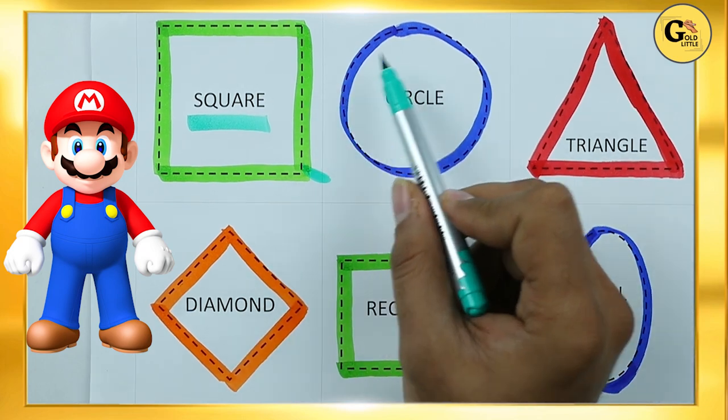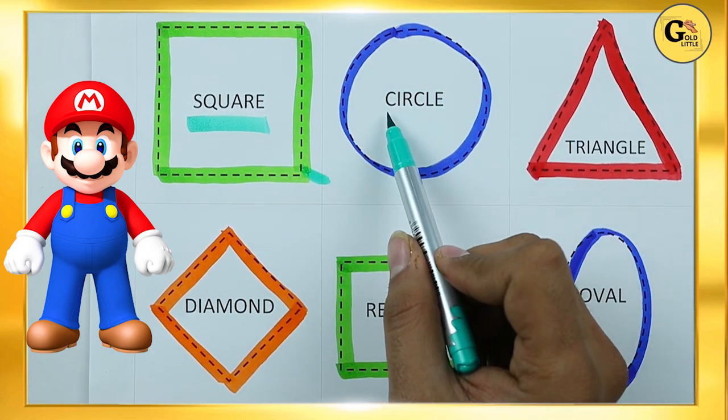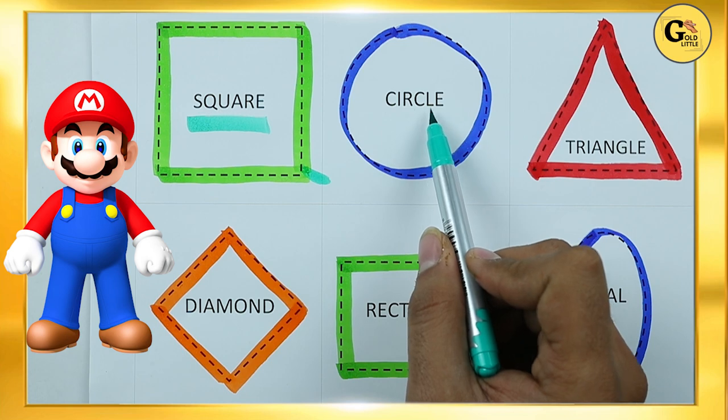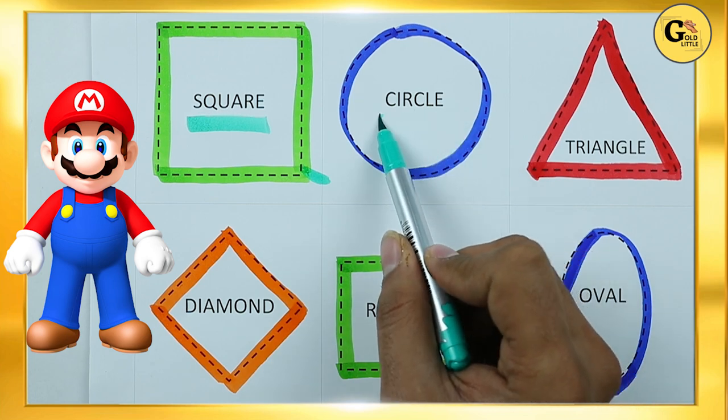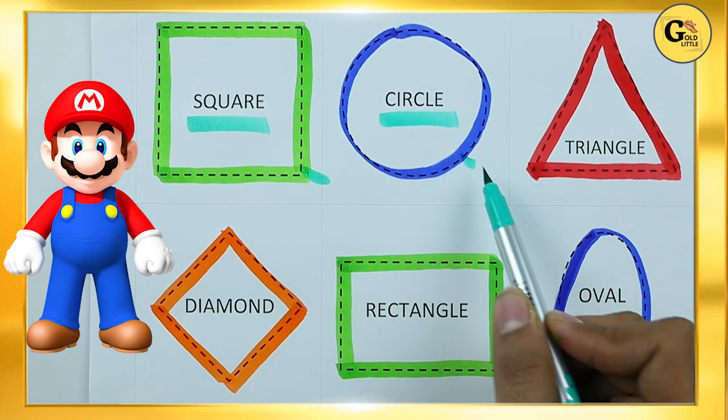Which shape is this? Circle. C-I-R-C-L-E. It's a circle with blue color.